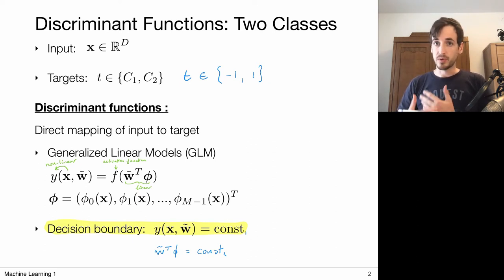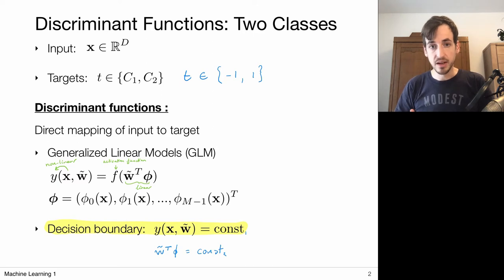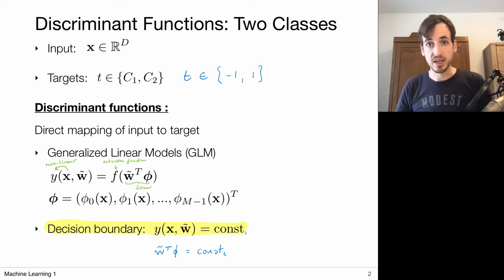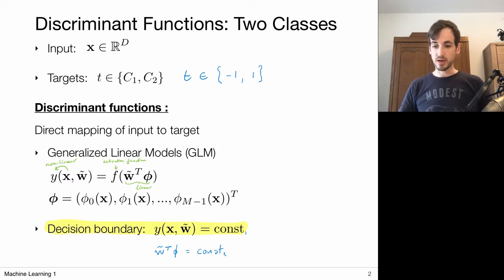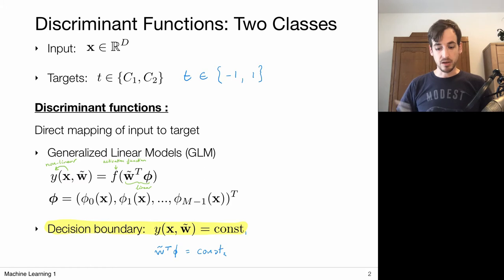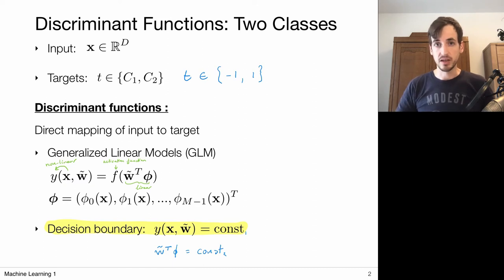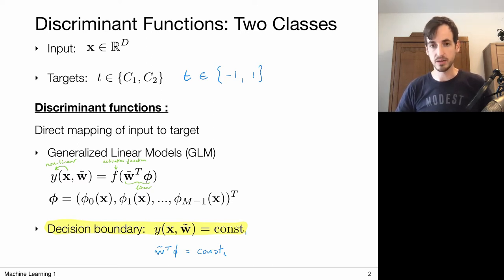I want to remark that in a probabilistic setting, the term generalized linear model has a special meaning — models are called generalized linear models only if the activation function maps the input to a corresponding expectation for the predictive distribution. But that's a detail not too important here. We focus on the discriminant function and completely discard probabilities, meaning I can choose the activation function to be whatever I want, typically in a way that fits the problem and defines useful error functions to minimize. Generalized linear models lead to linear decision boundaries.